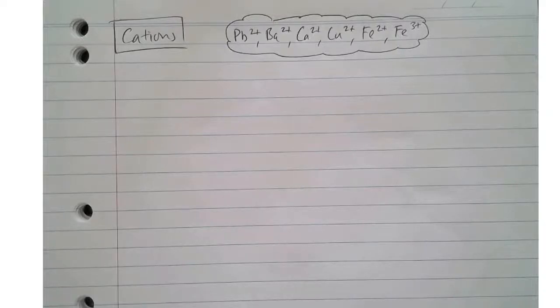Hi everyone, in this video we're going to be talking about the processes that we can use to test for cations and anions. I'm going to be using the document camera to outline a flow chart that we can use to identify, firstly starting with cations.